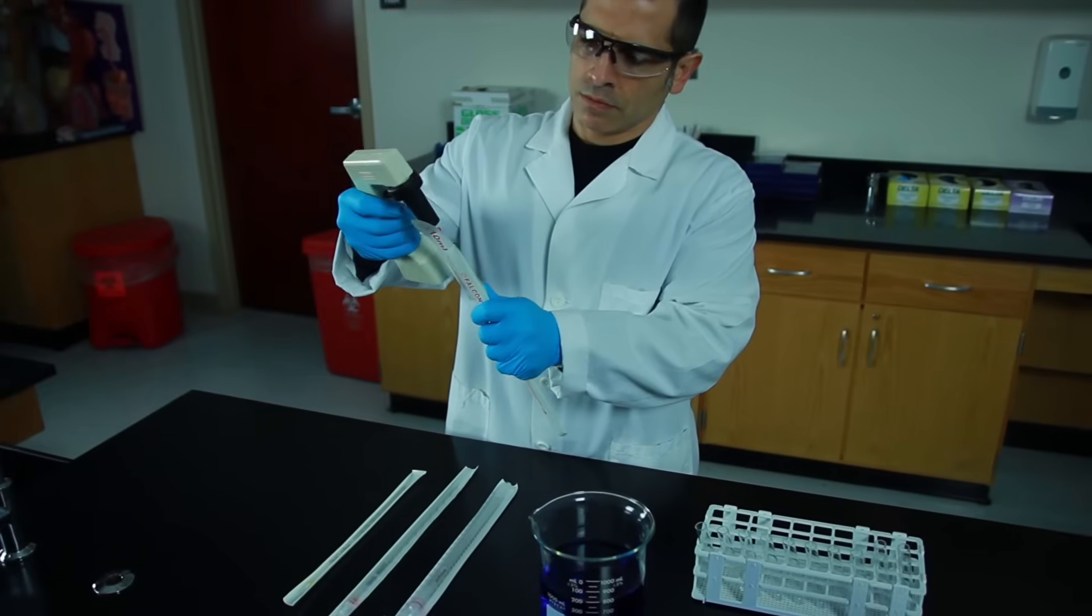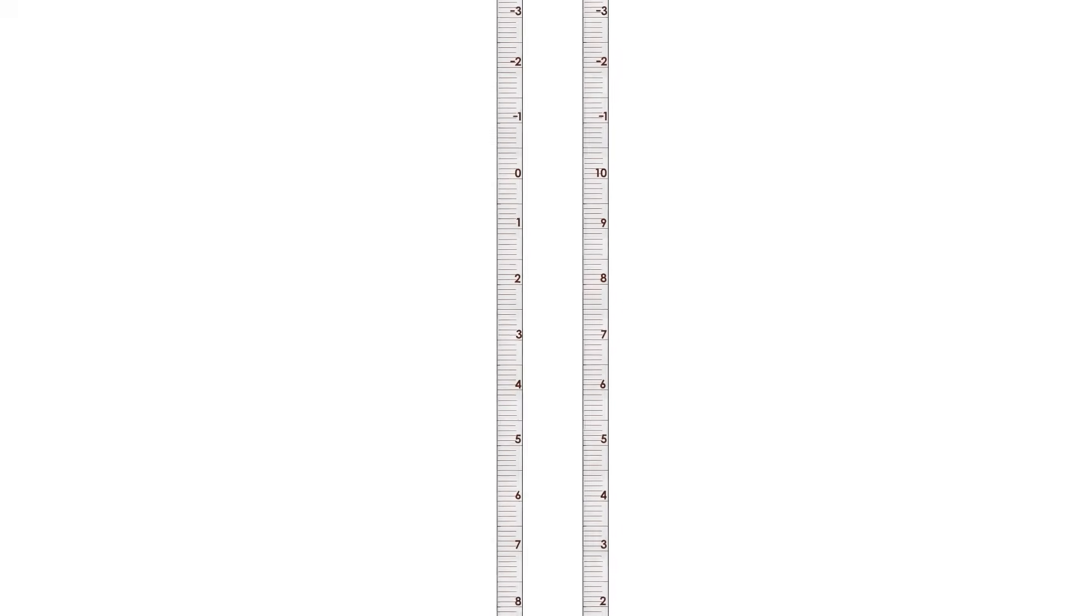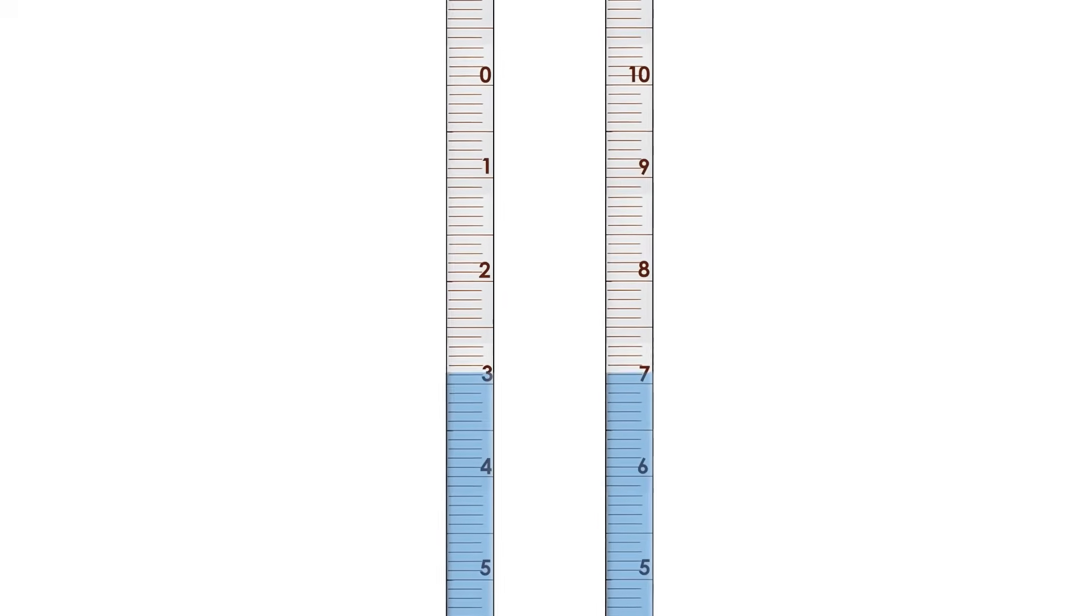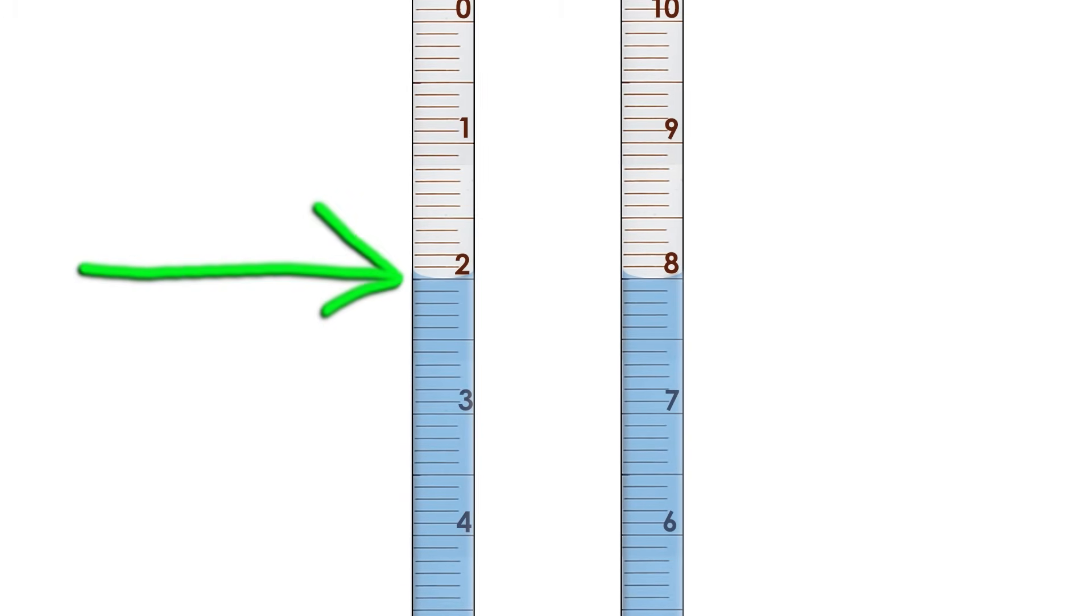What if we wanted to draw up 8 milliliters of solution? Well, if you're looking at the scale that goes down 0 to 9, then you would draw up the solution until the meniscus reaches the 2 milliliter mark. And if you use the reverse scale, then the meniscus is at the 8 milliliter mark.